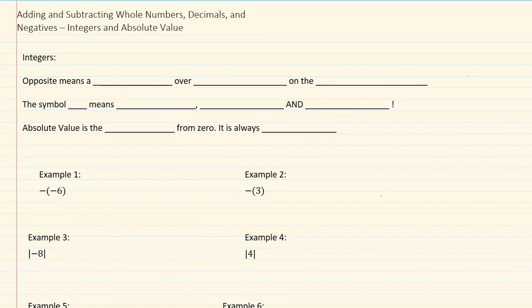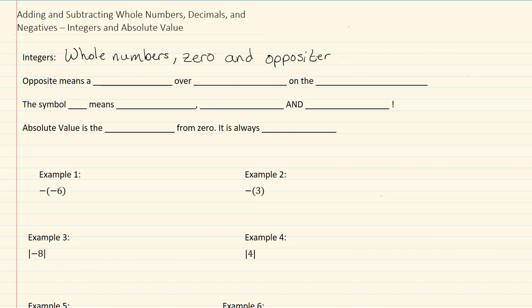Adding and subtracting whole numbers, decimals and negatives, integers, and absolute value. Integers are whole numbers, zero, and opposites, or negatives.